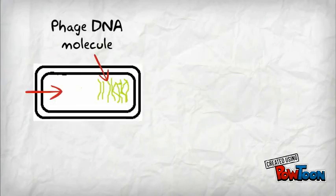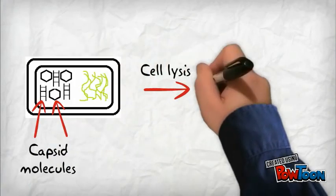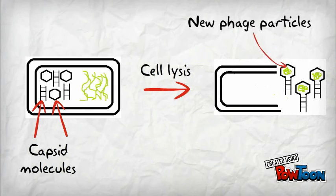Then, in the cell, the phage DNA will replicate. Capsid components are synthesized and the new phage particles are assembled and released inside the cell. Cell lysis occurs and new phage particles leave the cell.